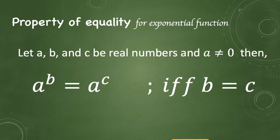Let's take a look at the property of equality for exponential functions. Let a, b, and c be real numbers, and a is not equal to 0. Then, a raised to b is equal to a raised to c if and only if b is equal to c. Conversely, when the bases are the same, so are their exponents.